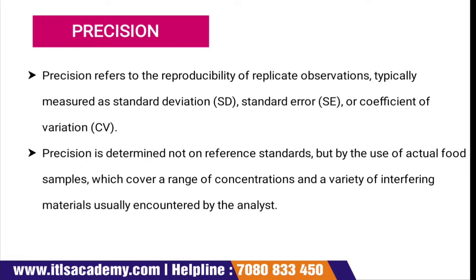Precision is the reproducibility of replicate observations, jo ek sahi tarike se experiment ka correction dekhta hai. Labs mein chances hain ki equipment mein contamination ho jaye, bad equipment ho, poor data processing ho, ya human error ho jiske wajah se result inaccurate ho sakta hai. Isliye precision ek series of measurements leta hai ek particular same thing ka jab tak experiment ka result sahi na aa jaye — to avoid human error, poor data processing, and bad equipment.